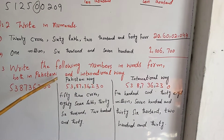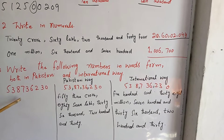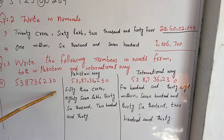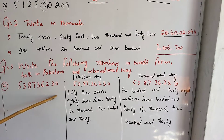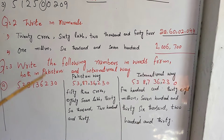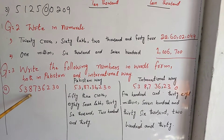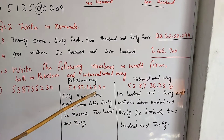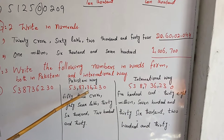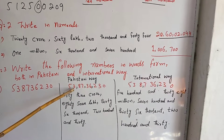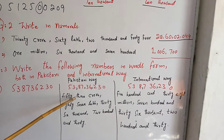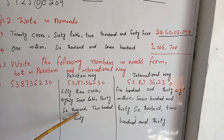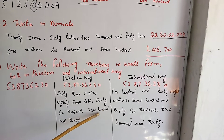Question number 3: Write the following numbers in words from both Pakistani and international ways. The number given is 538,736,230. In this number, you have to put commas in both Pakistani and international ways. In the Pakistani way with commas after 2-2 values: 53,87,36,230 — that is 53 crore, 87 lakh, 36 thousand, 230.